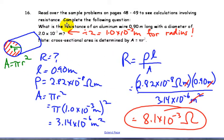Just be aware, quite often you're given a diameter. You have to change it to a radius to get the cross-sectional area.